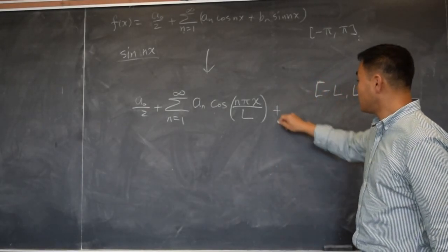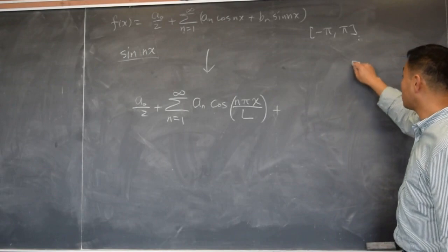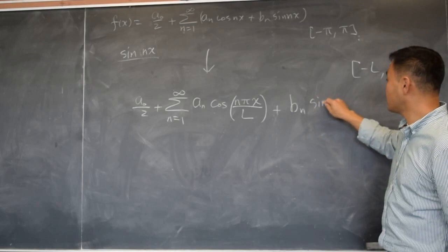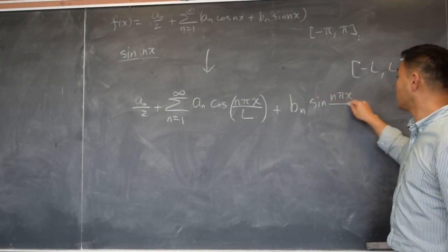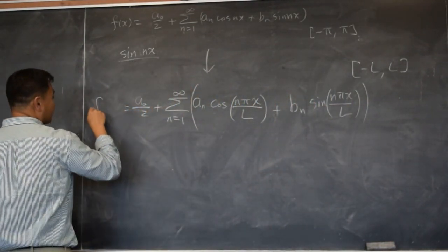So this is what you need in order for the Fourier series to be Fourier series over negative L to L. bn sine n pi x over L. And that's your function f of x.